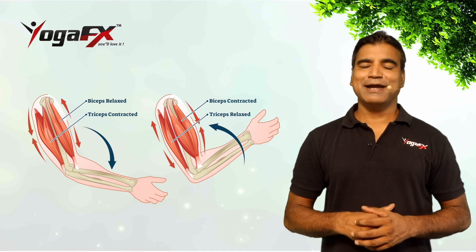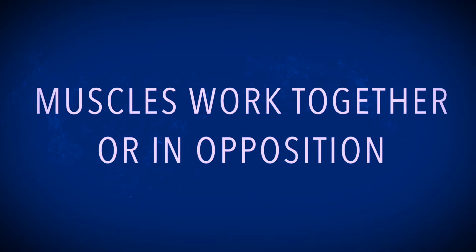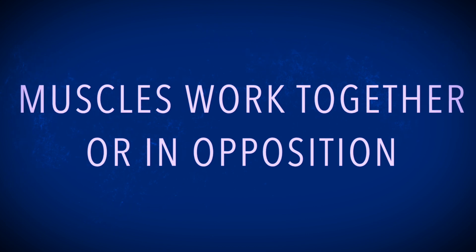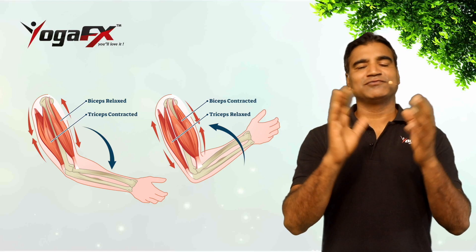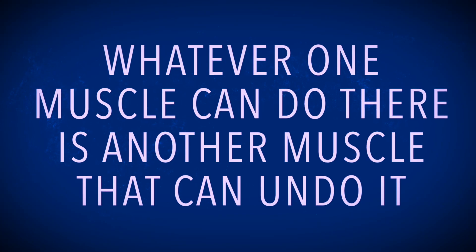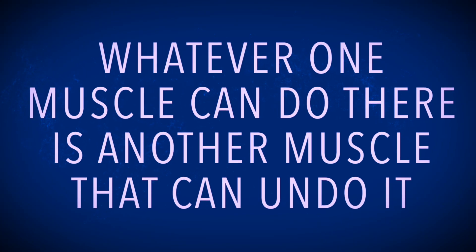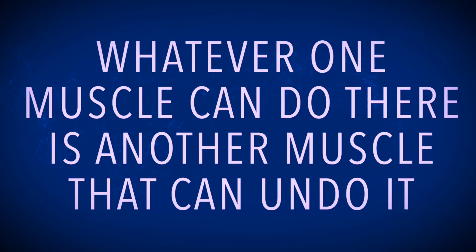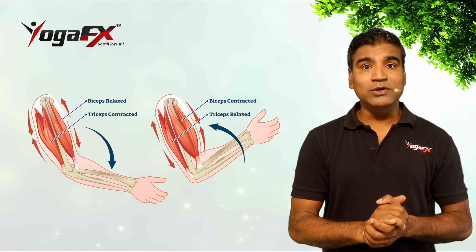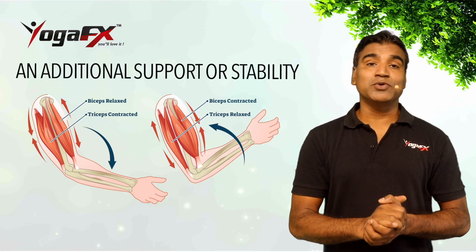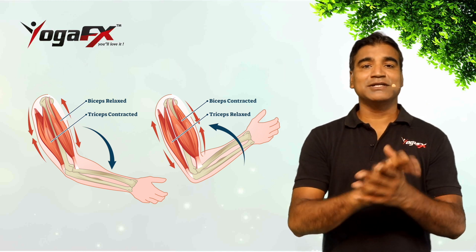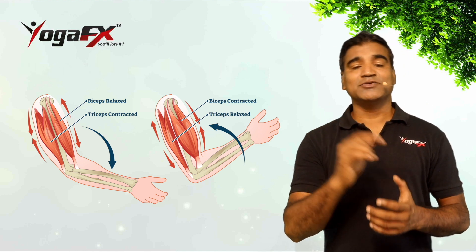Group action of muscles. Muscles work together or in opposition to achieve a wide variety of movements. Therefore, whatever one muscle can do, there is another muscle that can undo it. Muscles may also be required to provide additional support or stability to enable certain movements to occur elsewhere.